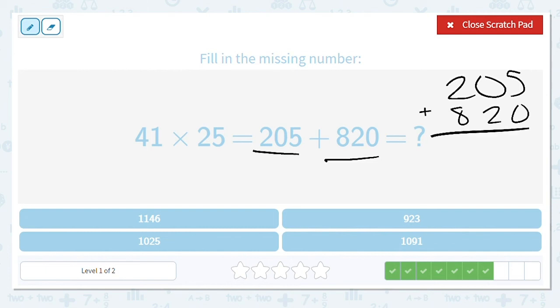Let's add it up, and that should give us our final product. 5 plus 0 is 5, 0 plus 2 is 2, and 2 plus 8 equals 10. So 1,025 is our final answer.